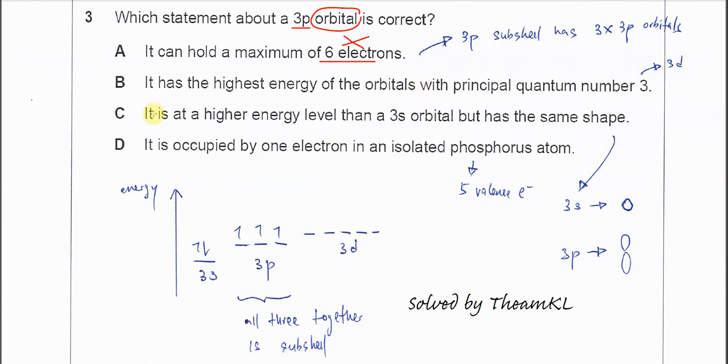Okay, B: it has highest energy of orbitals with principal quantum number 3. This is not the highest energy of the orbitals. You have to understand when the n equals 3, the shell actually has 3d. So the 3p is not really the highest energy orbitals, right? So this is wrong.